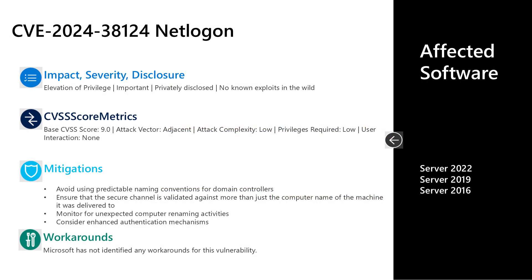Let's take a look at the first vulnerability: CVE-2024-38124. This is an important elevation of privilege vulnerability, privately disclosed with no known exploits in the wild. It has a base score of 9.0 on that scale of 10. The attack vector is adjacent, attack complexity is low, privileges required is low, and user interaction is none. A threat actor who leveraged this vulnerability would be able to gain domain privileges, which is pretty much the top tier of on-prem privileges.